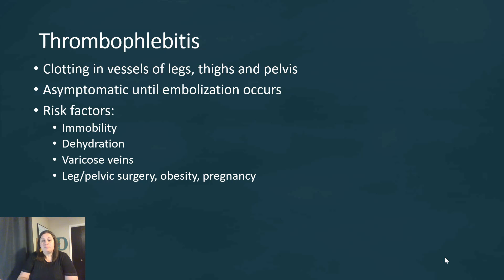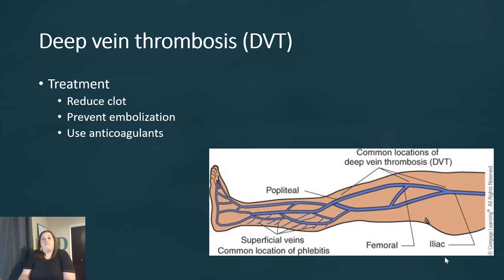Additional risk factors for thrombophlebitis include dehydration, varicose veins, recent leg or pelvic surgery, obesity, and pregnancy. When blood clots develop in a deeper vein, they are referred to as deep vein thrombosis, or DVT.